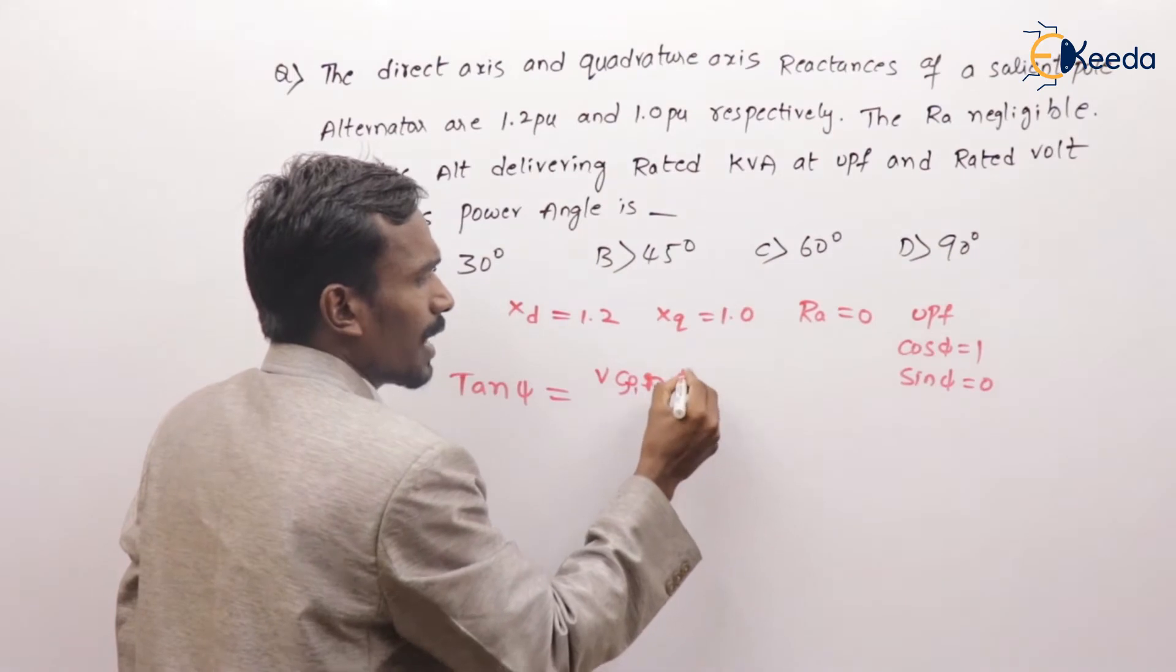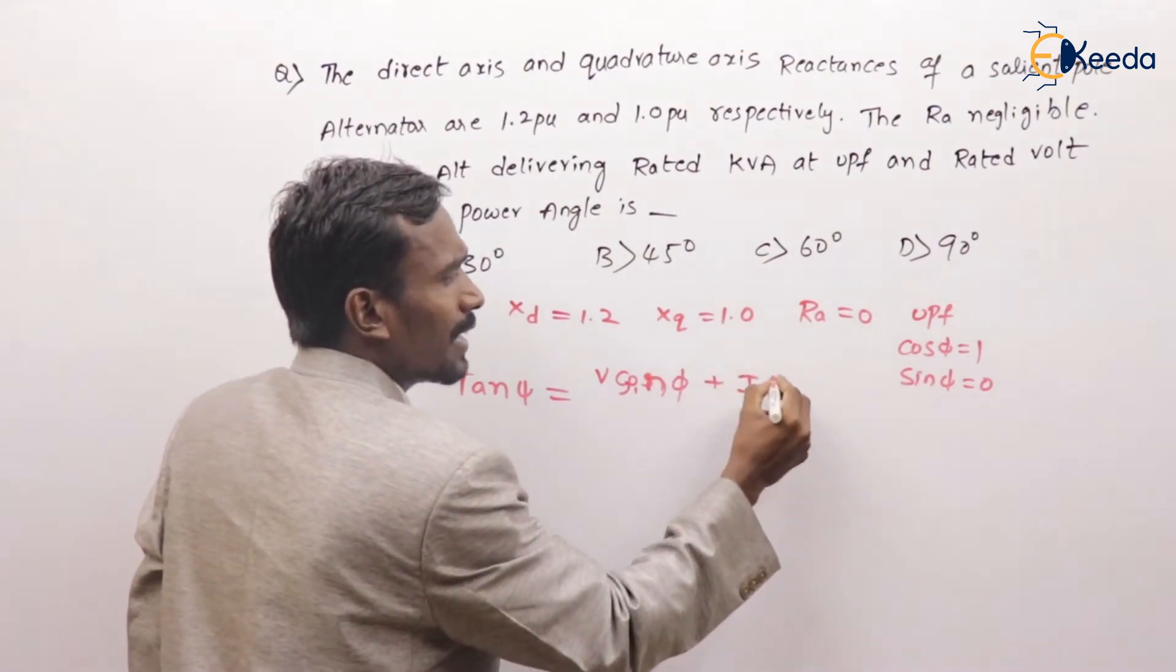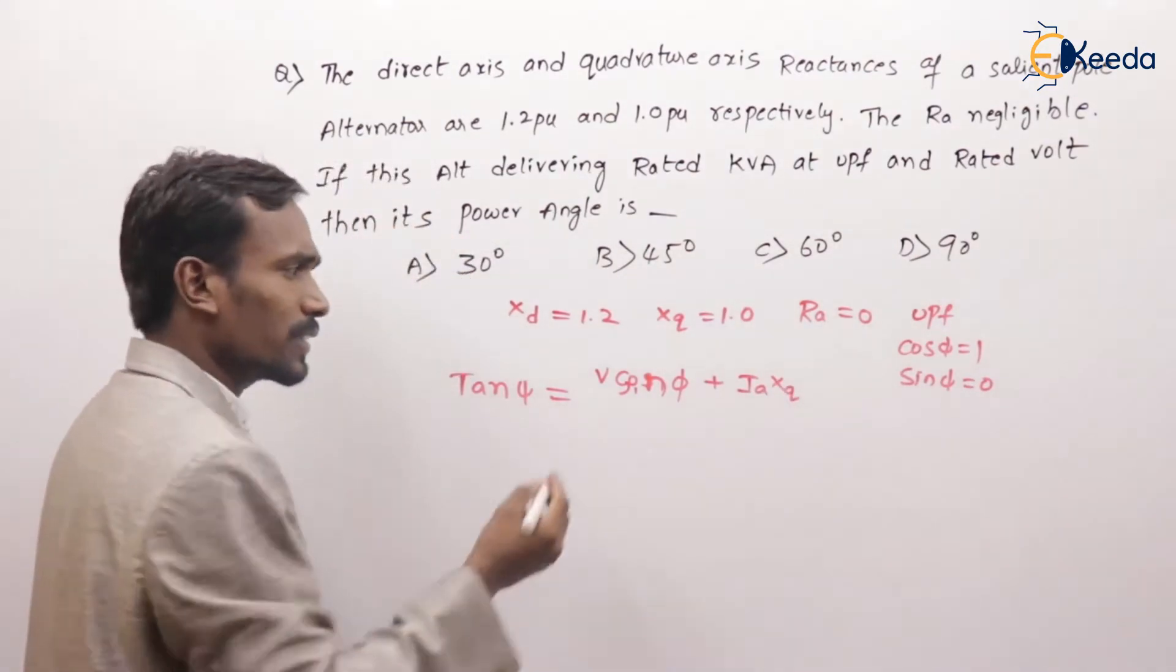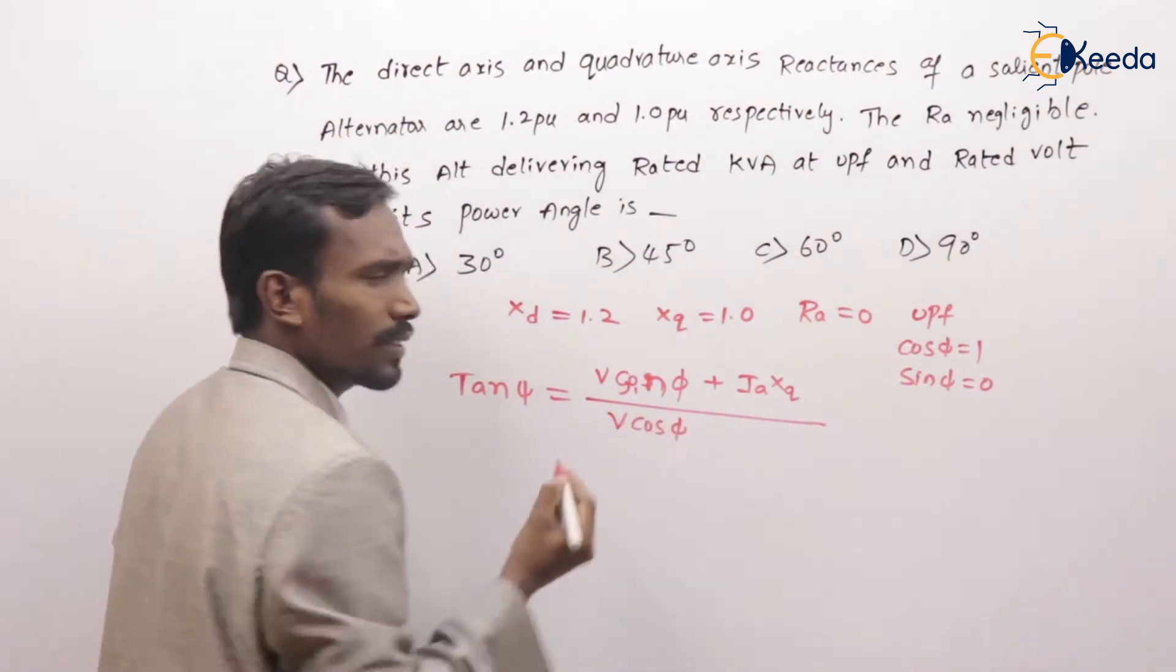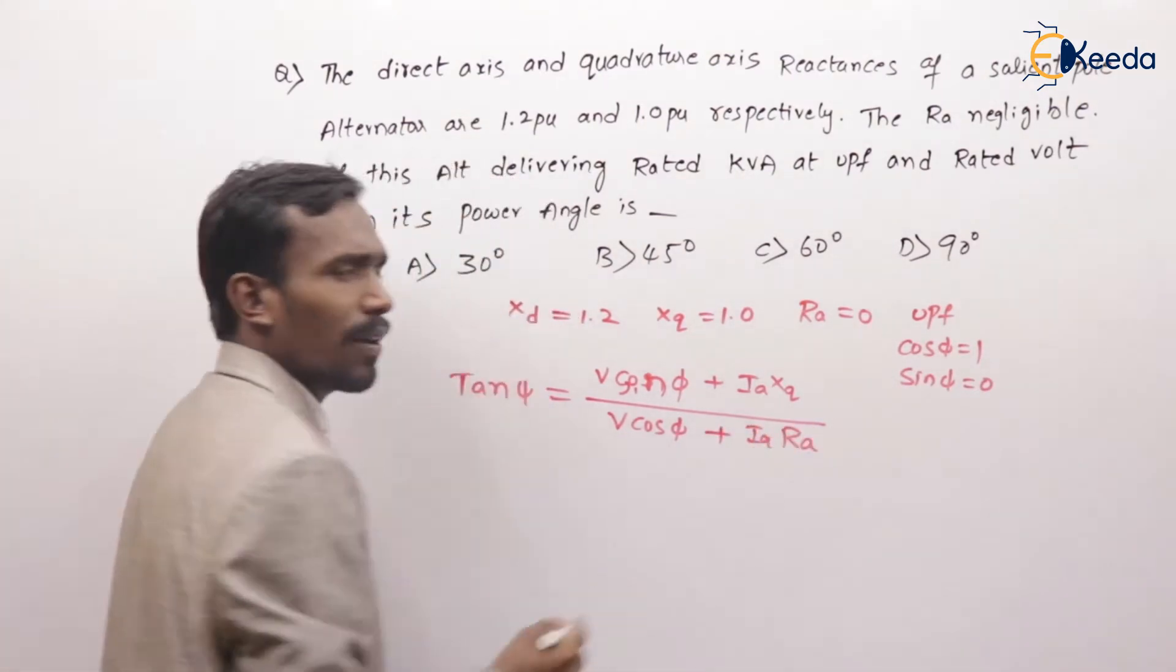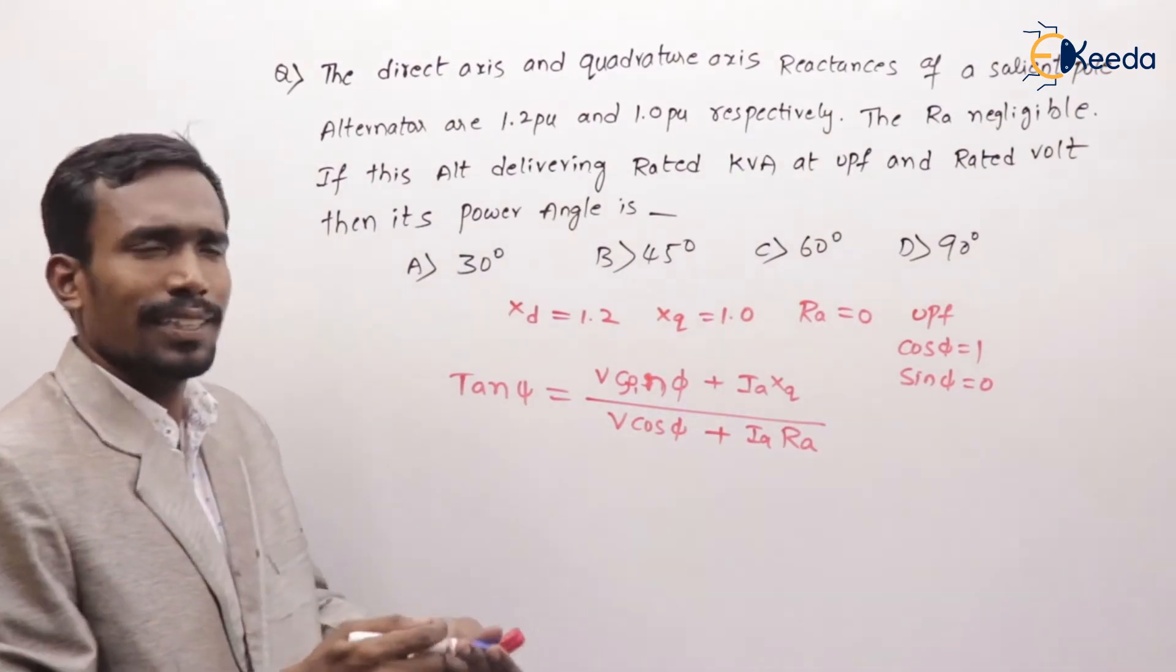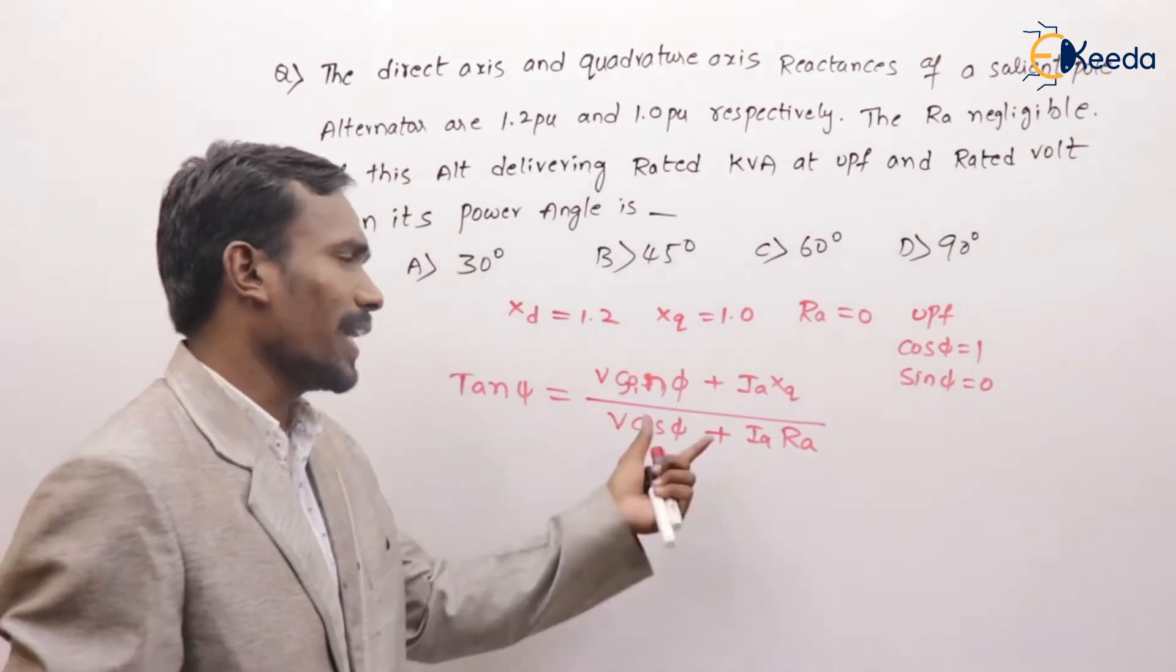V sin φ plus Ia xq, Ia xq, divided by V cos φ, V cos φ plus Ia Ra. What is the formula? Tan ψ is equal to V sin φ plus Ia xq divided by V cos φ plus Ia Ra.